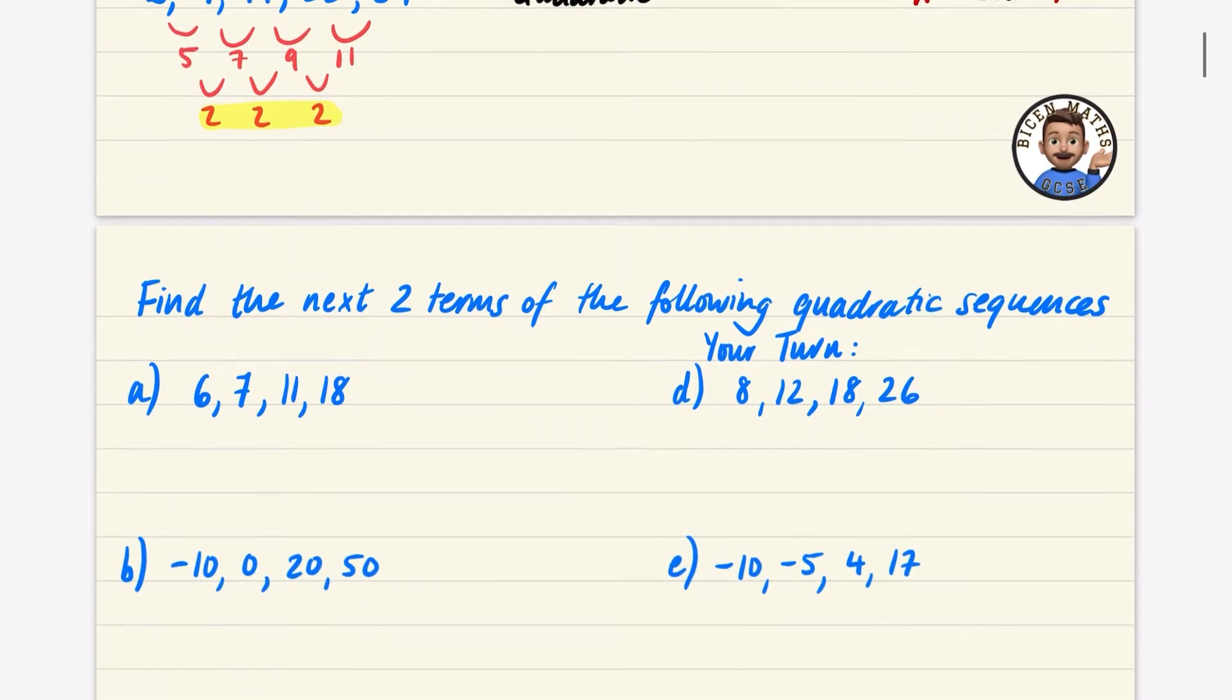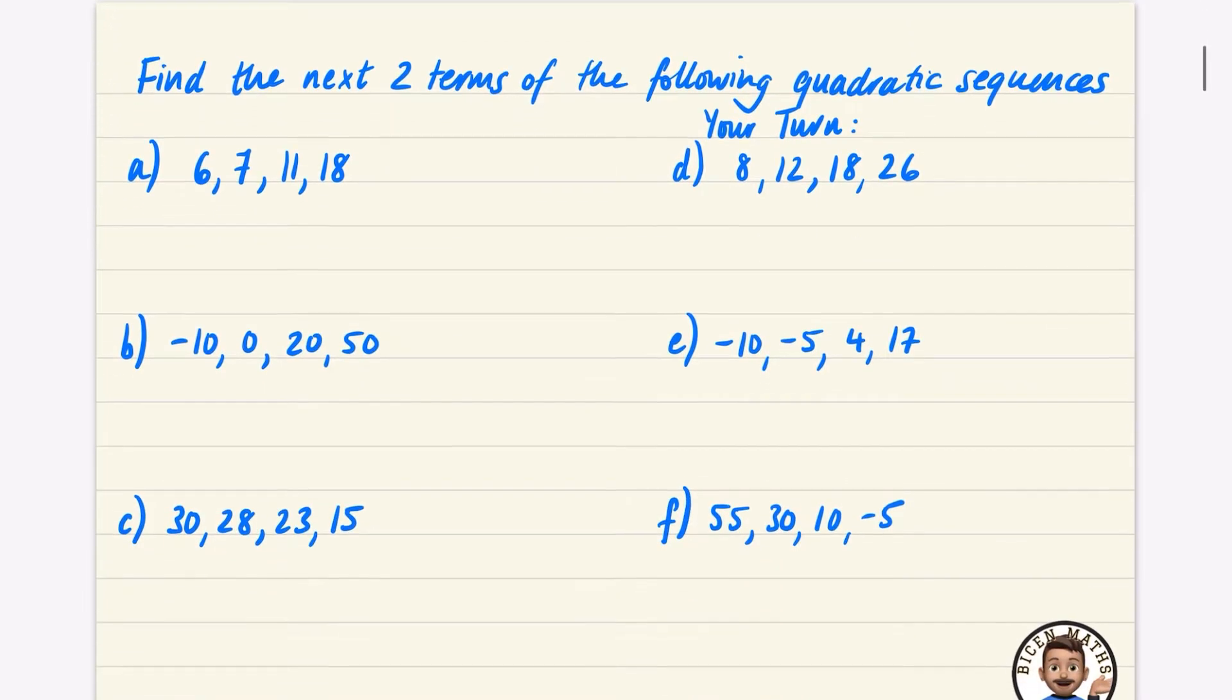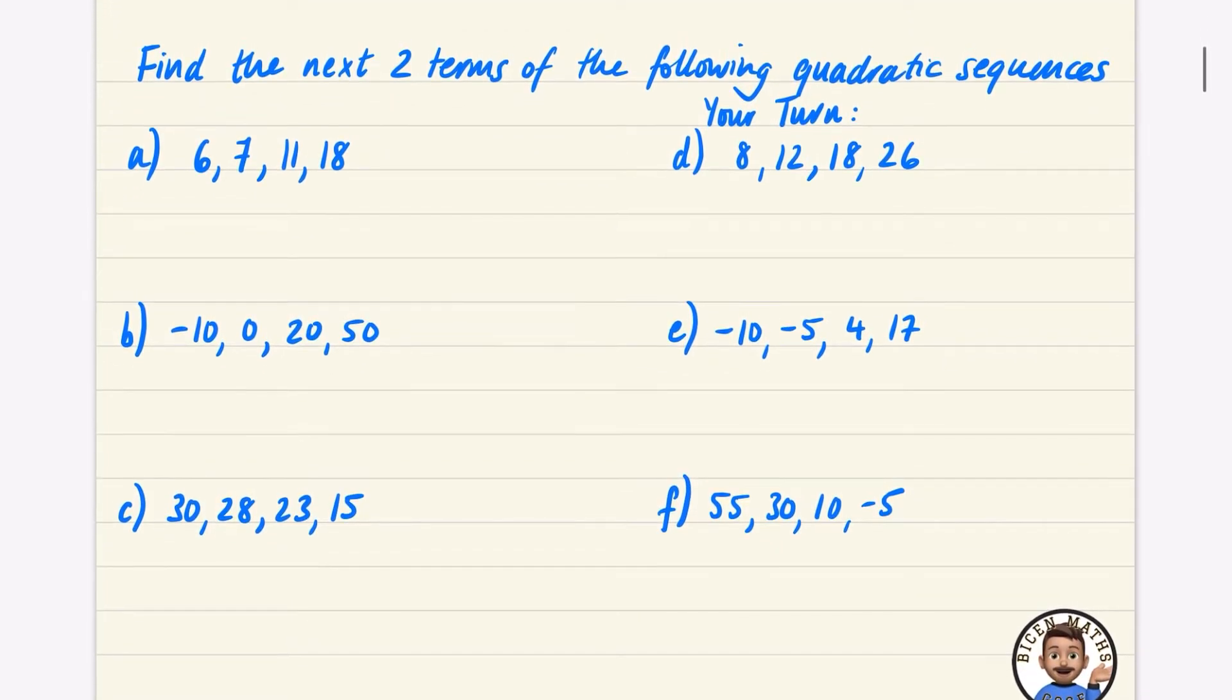Let's have a look at some quadratic sequences and see if we can find the next two terms. I'm going to do a, b, and c, and then I want you to have a go at d, e, and f. I'm just going to work out what they're going up by each time. Six to seven is going up by one, seven to eleven is going up four, eleven to eighteen is going up seven. So one to four is going up three, four to seven is going up three.